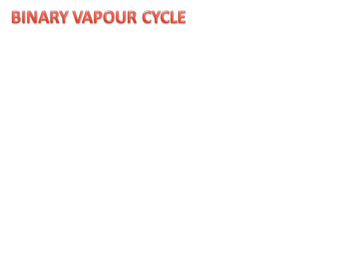Today we will discuss the binary vapor cycle — how it works and what its parts are. Firstly, we will discuss the parts of the binary vapor cycle. We have a mercury boiler.